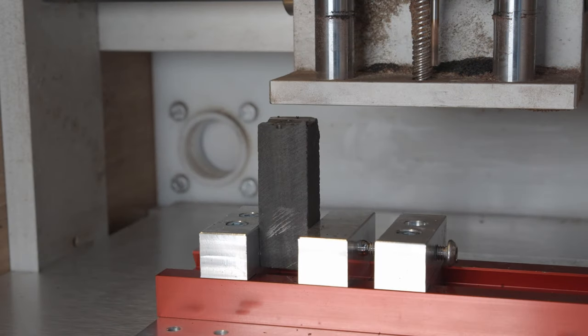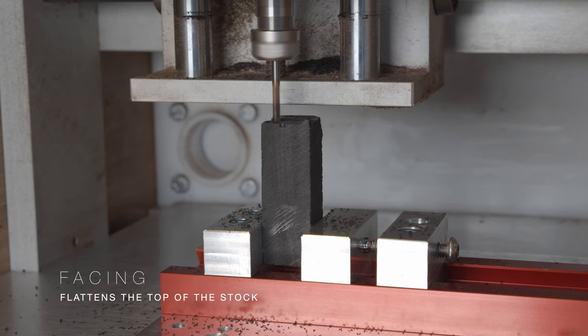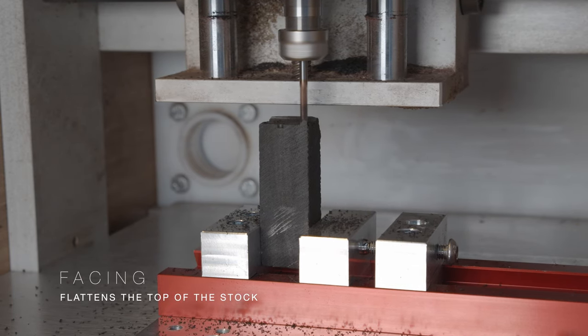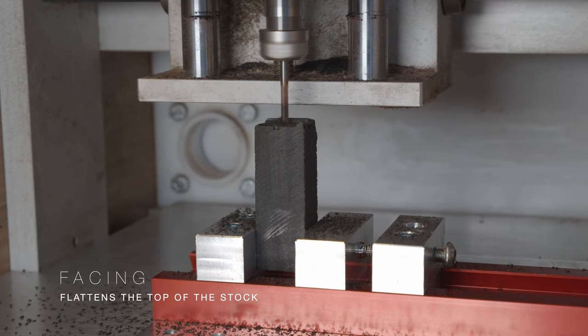We begin by fixturing a piece of exotic wood in a vise so that we can start working on the top of the switch tip. The first operation is facing, and that actually ensures that the top of the wood is nice and level, so that the top of the switch tip is nice and flat.